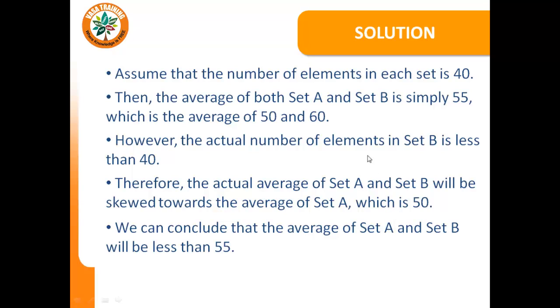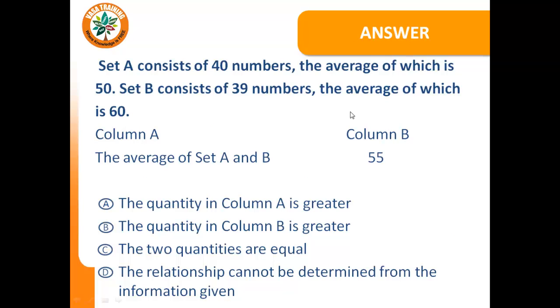Therefore, we conclude that the average of set A and set B will be less than 55. So the answer is column B is greater. That's option B.